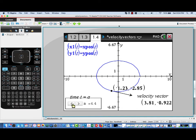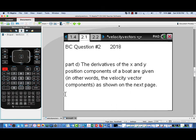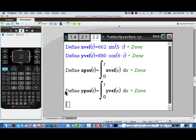Let's apply it to one of the questions from the BC exam 2018. In question 2, part d, rather than the position functions, the derivatives of those components are given. So we can work backwards. I've got the velocity given explicitly, and these are the functions that were given in the problem.